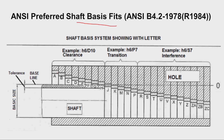In the shaft basis system, we vary the hole sizes. From A to H holes, we get clearance fit (e.g., H6/D10). From J to P holes with the H shaft, we get transition fit. From R holes to ZC with the H shaft, we get interference fit.